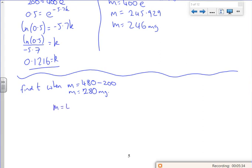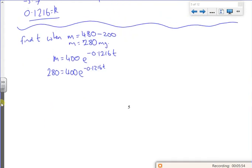So I'm back to M equals 400 E to the minus 0.1216t, and I'm going to set M to be 280. I divide through. So 400 over 280 is like 28 over 40, it's like 7 over 10, 0.7.